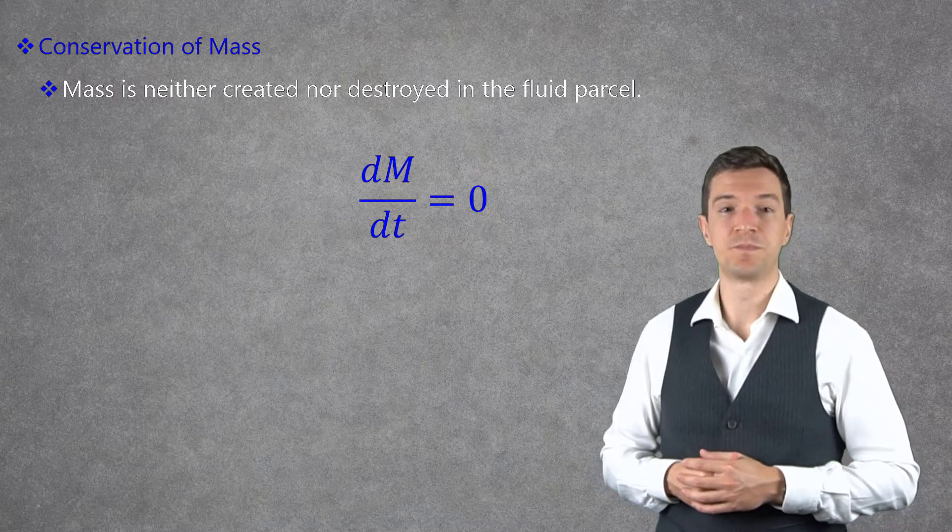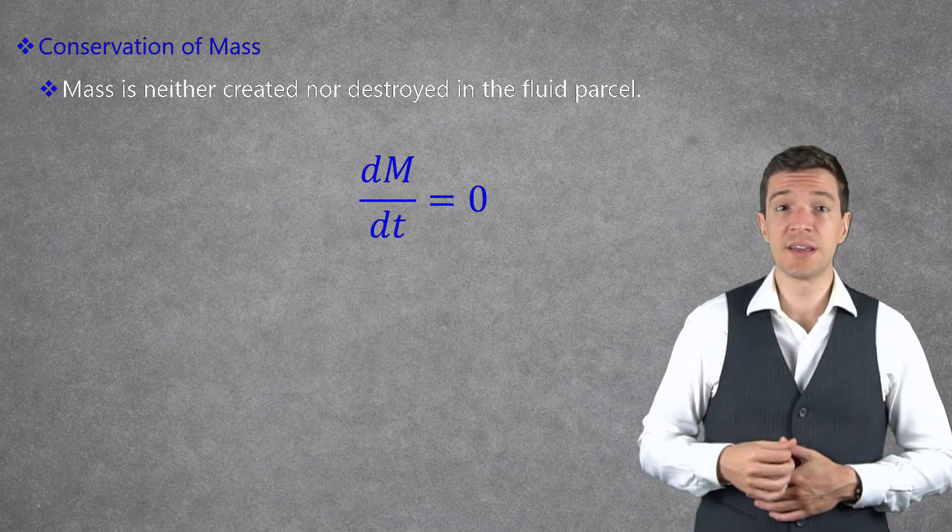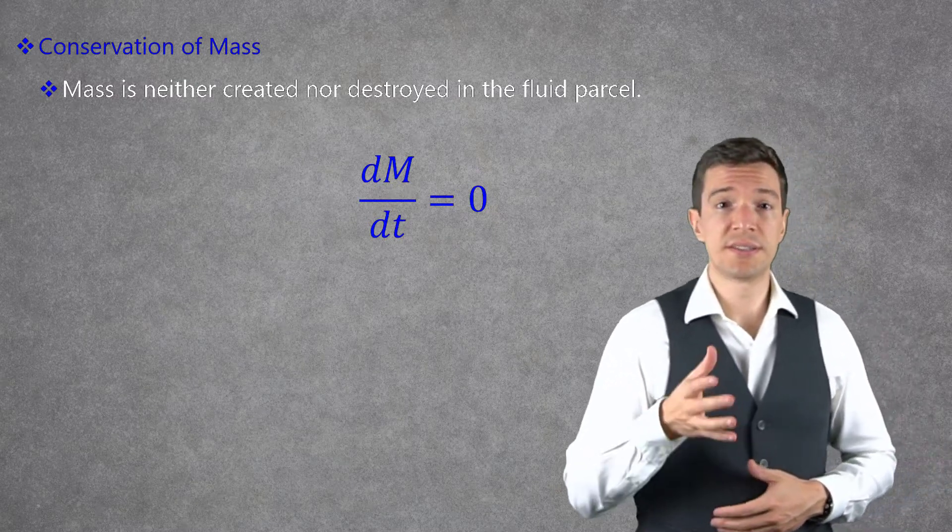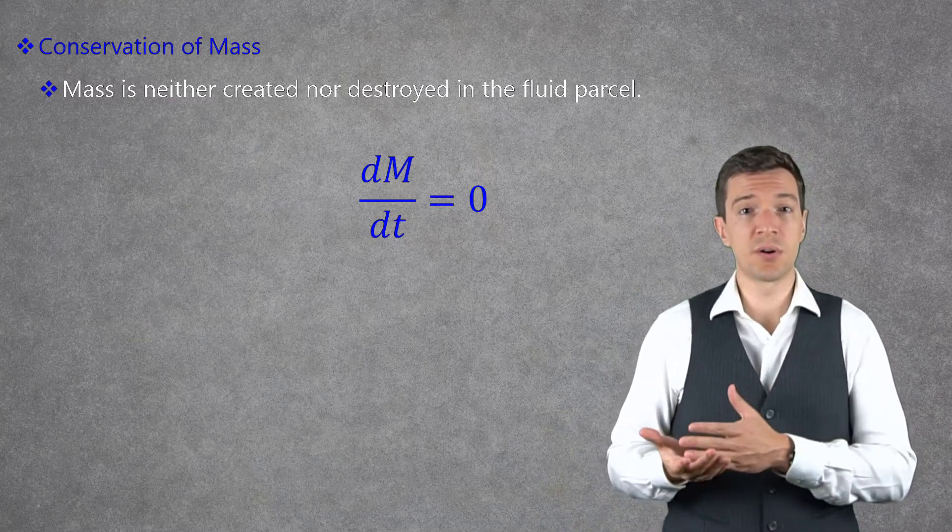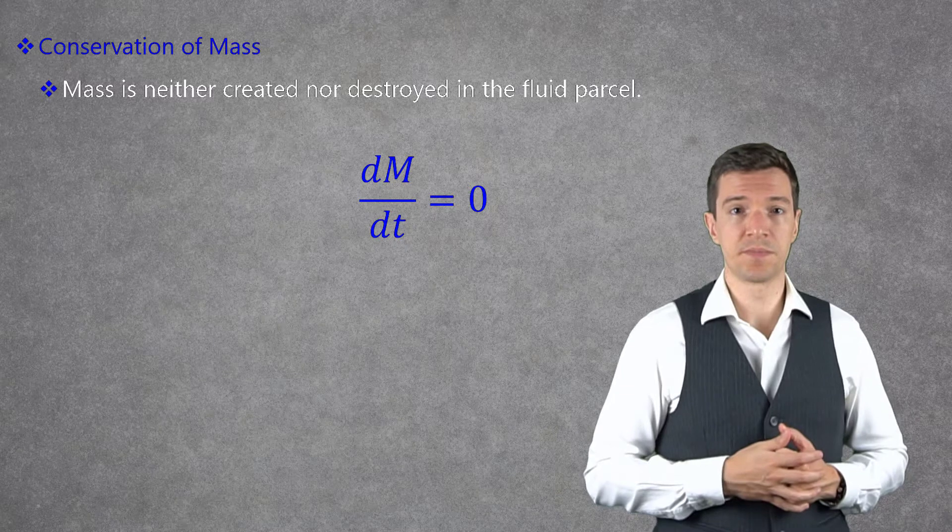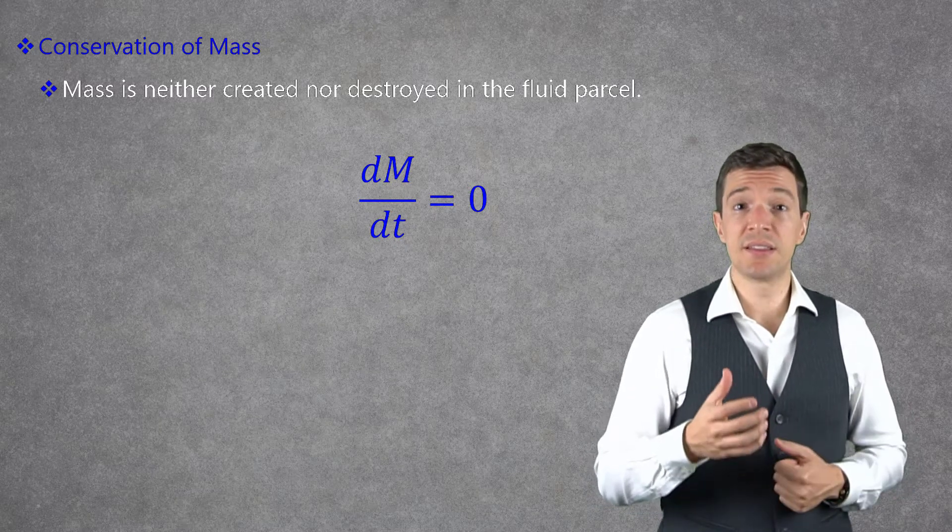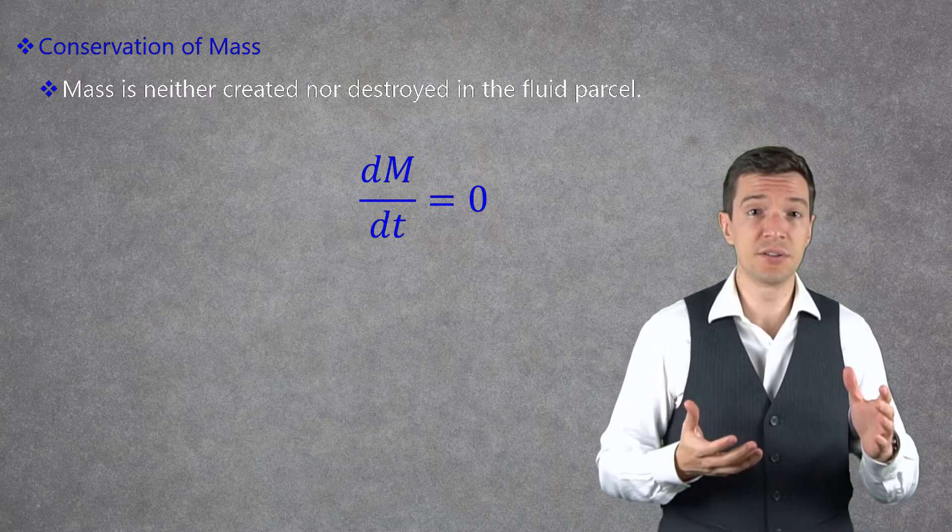Let's start with the first equation of fluid motion, the conservation of mass. The conservation of mass, or continuity equation, states that the mass is neither created nor destroyed in the fluid parcel. This means that the mass variation in time is equal to zero.